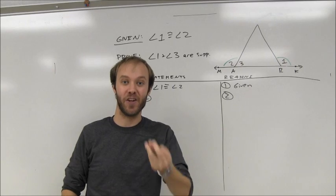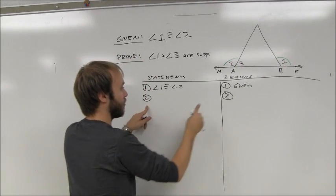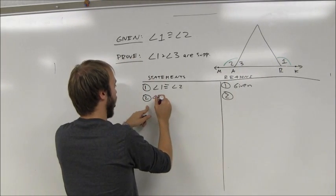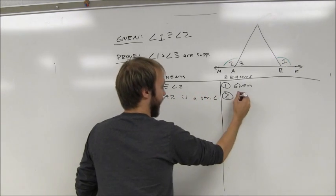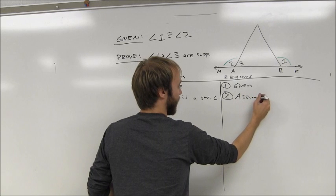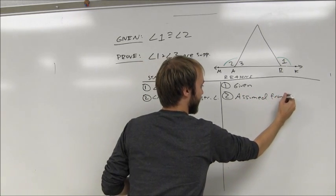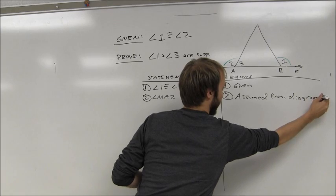If I'm going to show that they form a straight angle, that needs to be included in the proof. I'm going to say that angle MAR is a straight angle, and that's one of the few things that we are allowed to assume from the diagram.